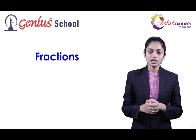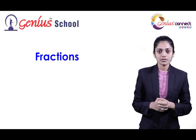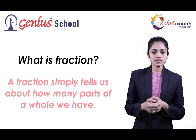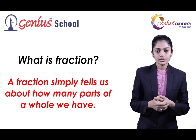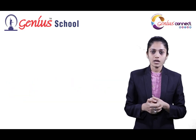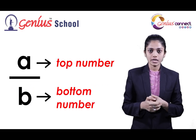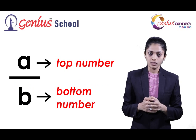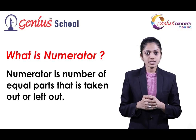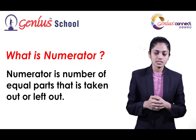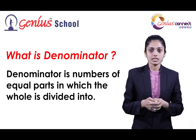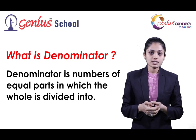Numbers in these forms are called fractions. Now we will take one simple example: A divided by B. A fraction simply tells us about how many parts of a whole we have. You can recognize a fraction by the line written between two numbers. A divided by B is a fraction where A is the top number and B is the bottom number. A is called the numerator and B is called the denominator. The numerator is the number of equal parts that are taken out or left out. The denominator is the number of equal parts into which the whole is divided.